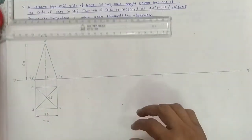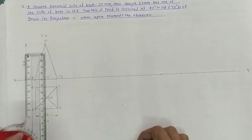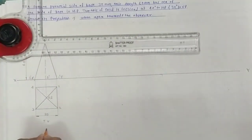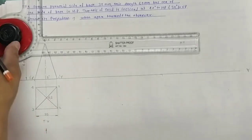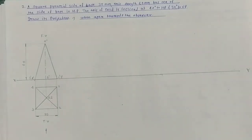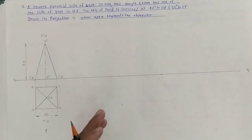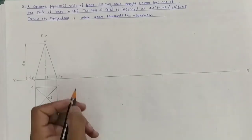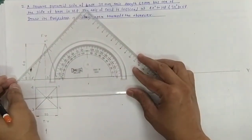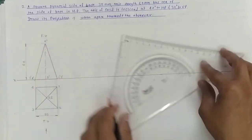Show the position of the observer. Now in the intermediate position, the axis is inclined at 40 degrees to HP. So from this, it is inclined at 50 degrees to XY. Take one point and draw a line at an angle of 50 degrees.